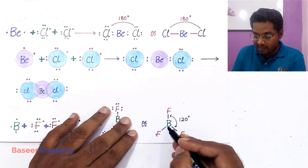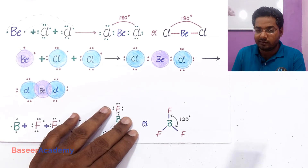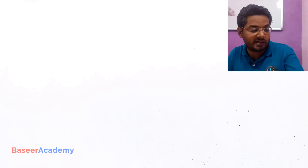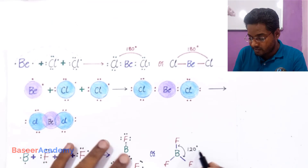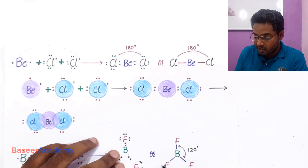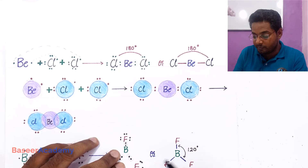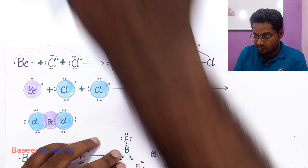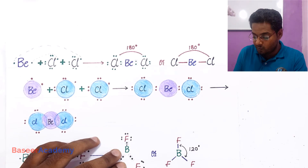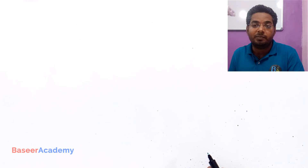If the central atom has three bond pairs and no lone pairs, the bond angle is 120°. The three fluorine atoms are at the three corners of a triangle. In the boron trifluoride molecule, the bond angle is 120° and the fluorine atoms are at three vertices of a triangle, so the shape is trigonal planar.